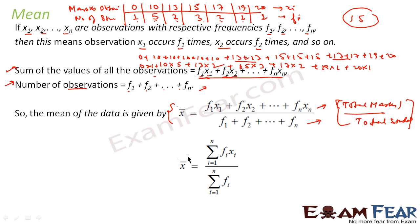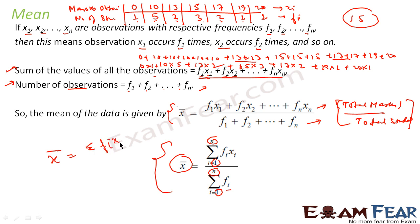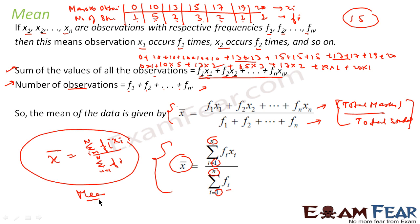So the mean x̄ is nothing but summation of fi·xi (where i goes from 1 to n) divided by summation of fi (where i goes from 1 to n). Logically, mean is: you add all the marks and divide by total number of students. That is exactly what we are doing — summation of fi·xi gives total marks, and summation of fi gives total number of students.